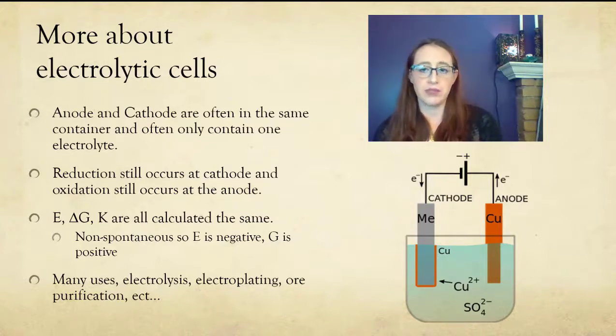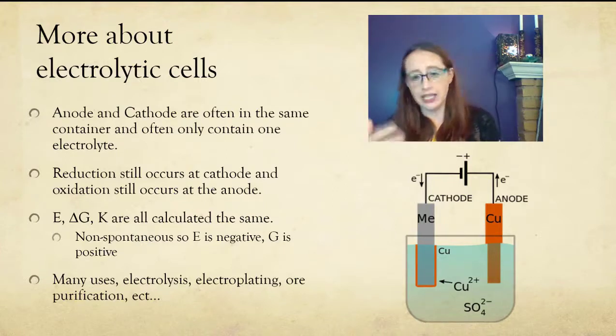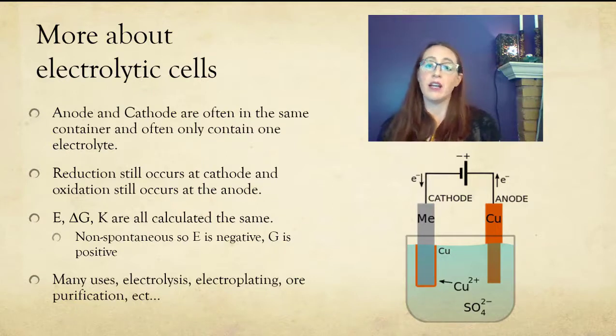Even within these though, the reactions and the nomenclature are the same. So reduction is still occurring at the cathode, and there's still a little bit of separation between the cathode and the anode, and then the anode is where the oxidation takes place. That's true regardless of whether it's galvanic or electrolytic, regardless of whether it's in one pot or two. Reduction is always at the cathode, and anode is always the oxidation.